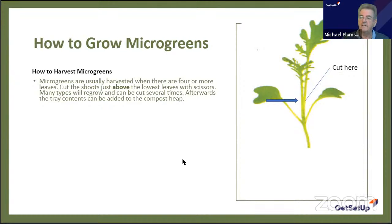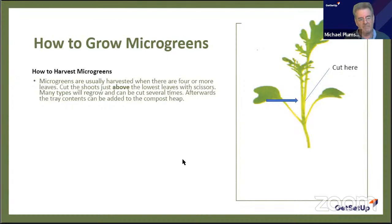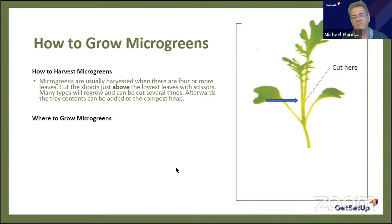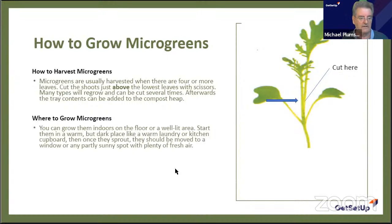I throw used soil into a broad bin in sunlight to dry out the roots that have been binding it together. Those roots will become part of the nutrients for the future. Before reusing, add a little natural organic nutrient or mix it with a bit of new organic soil.